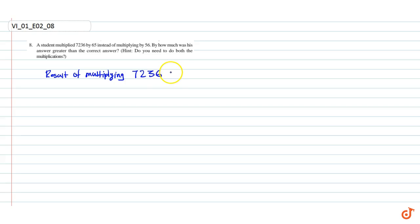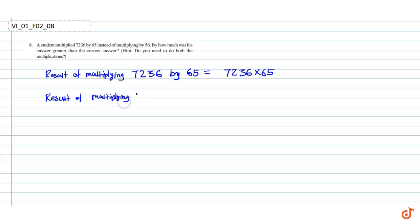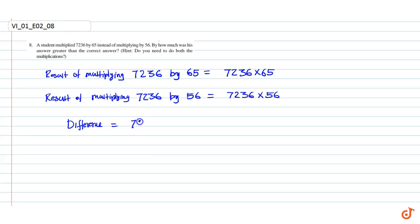We know that the result of multiplying 7236 by 65 is 7236 × 65, and the result of multiplying 7236 by 56 is 7236 × 56. The difference is 7236 × 65 minus 7236 × 56.